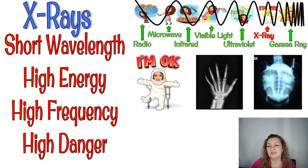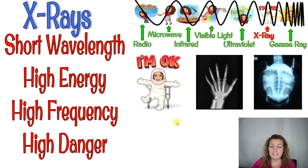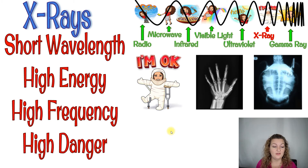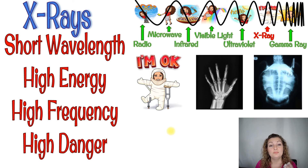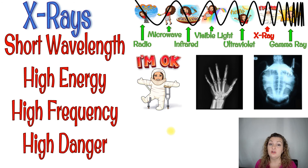Moving on to x-rays — that's our next one, and we're almost at the end. You can see our wavelengths are even shorter, so we have very high energy and high frequency — a lot of waves per second. This is going to be pretty high danger. Now, don't freak out when you hear that, because we do use x-rays in doctor's offices to check our bones and see if they're broken and other things. But we do track how much radiation we absorb from x-rays because they are harmful if we absorb too much, so we monitor that.